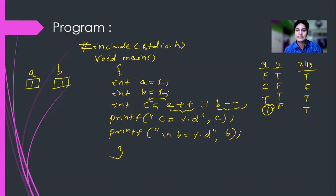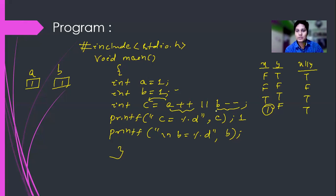So int c = a++: the value of a, which is 1, will be assigned to c, so c = 1. Now b is 1, so b-- — but this value does not need to be calculated because a is 1 (true), so the total statement is true. Therefore b will remain 1. The output will be: c = 1 and b = 1.